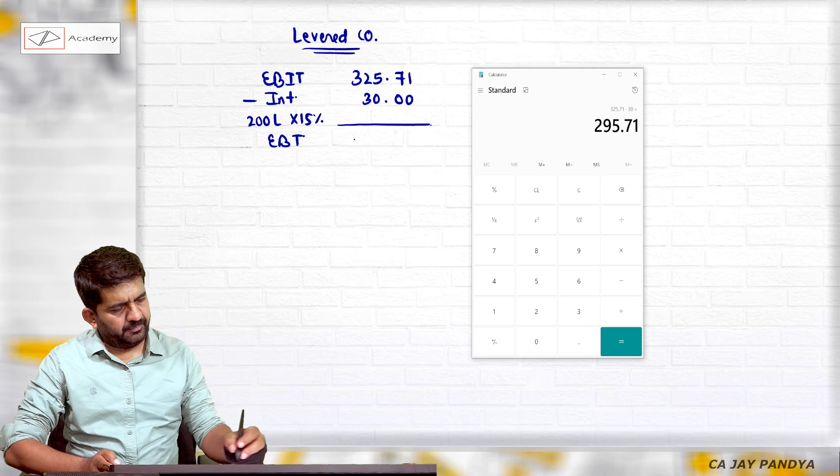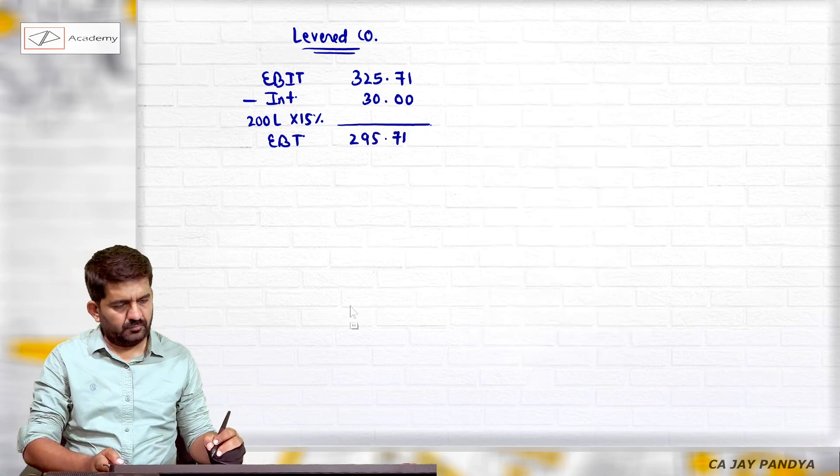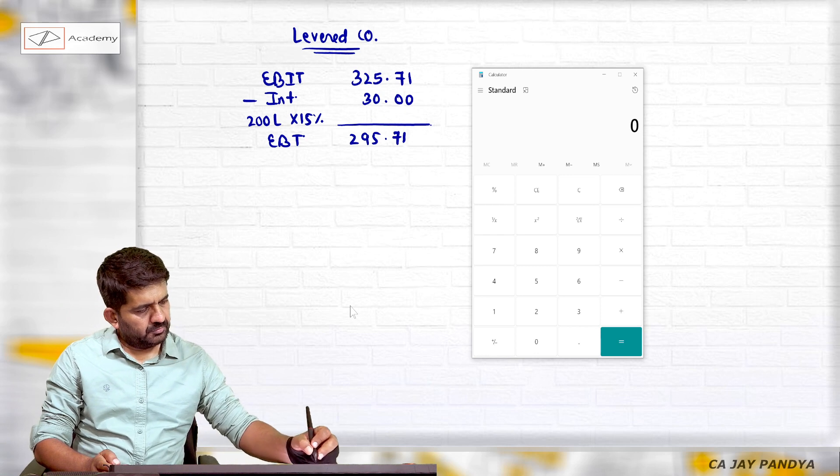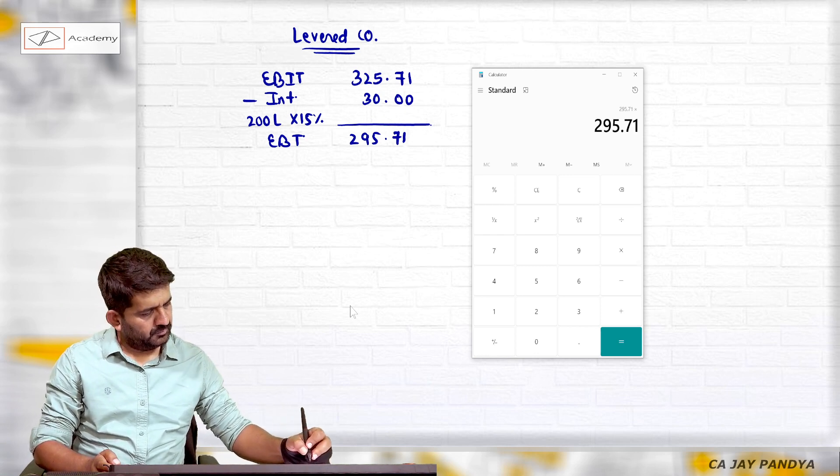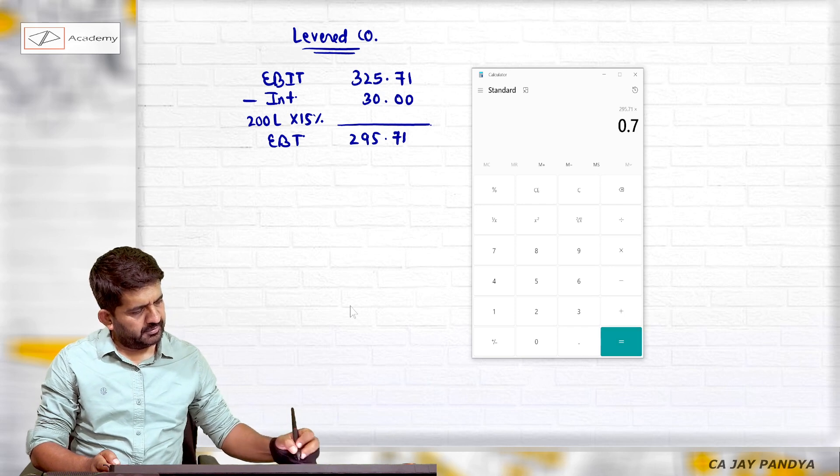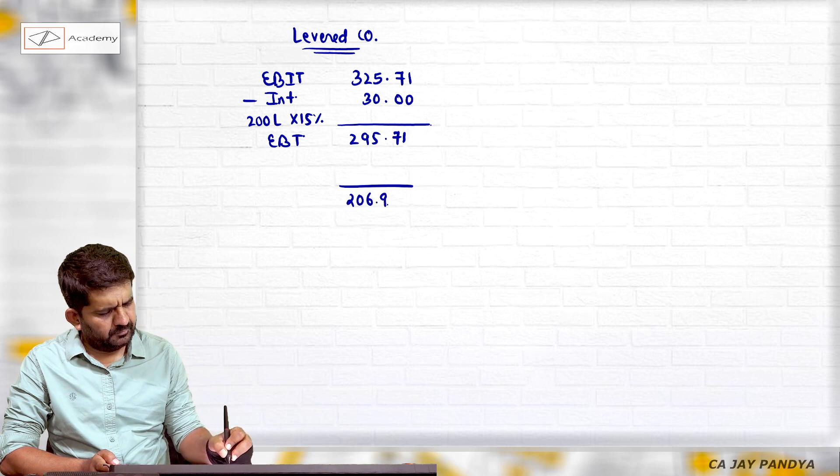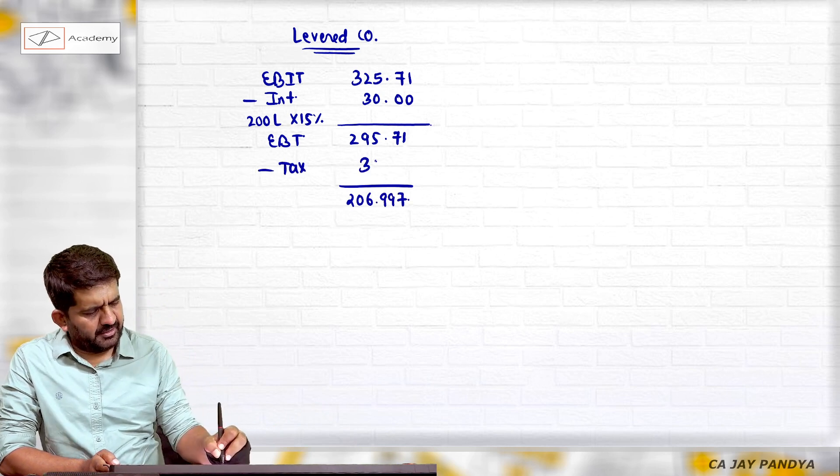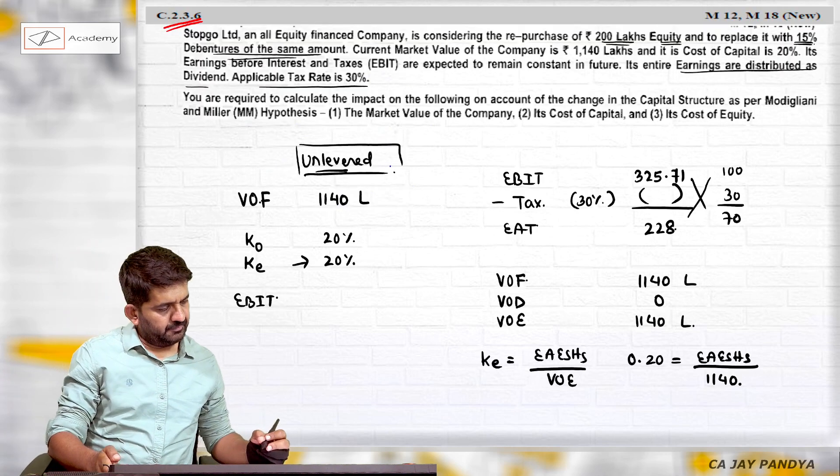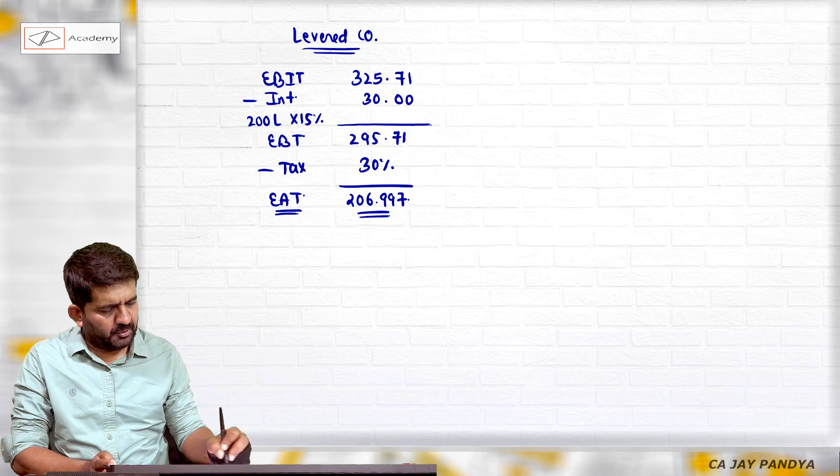295.71 minus 206.997. This is tax at the rate of 30 percent. This is earning after tax or earnings available to equity shareholders.